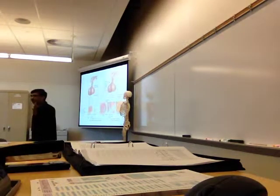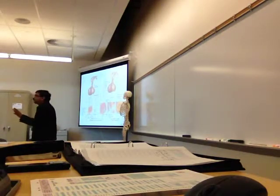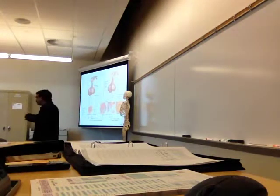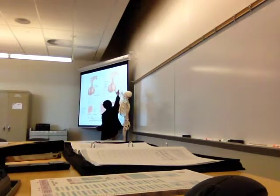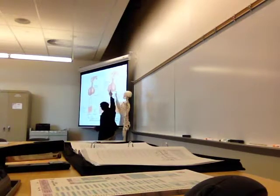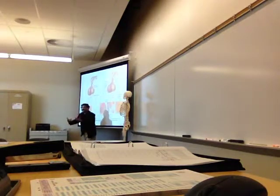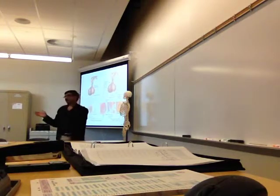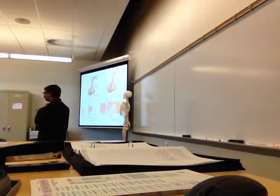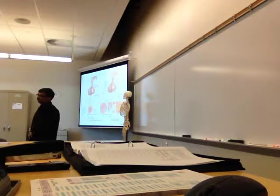If fertilization doesn't occur, corpus luteum will be destroyed after 14 days. Then that inhibition is gone because corpus luteum is not there and the hormones are not there. So the pituitary will again release FSH and LH, and another egg will mature and rupture. That's why the presence of corpus luteum is important — to prevent another egg from maturing and rupturing.